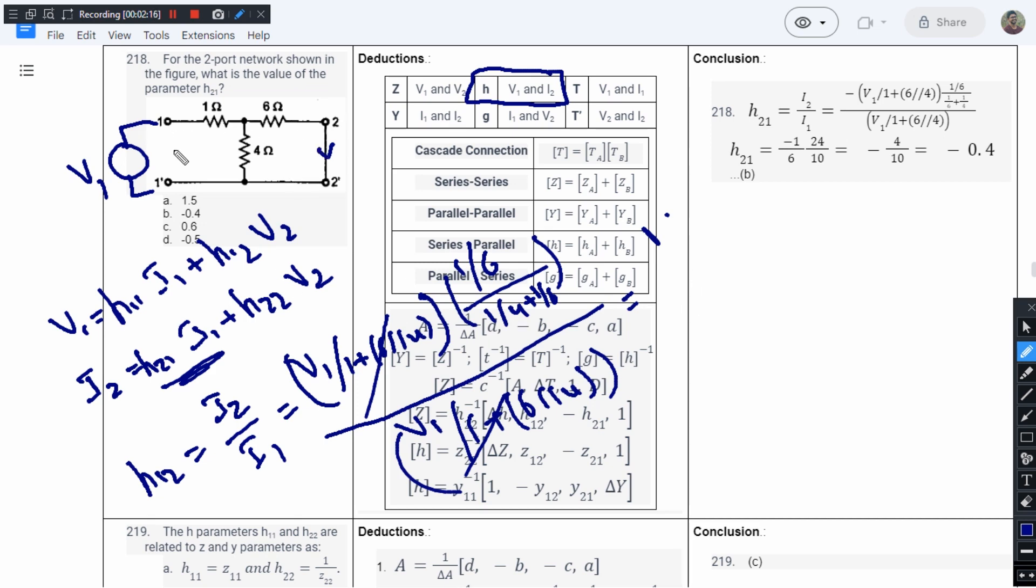While analyzing two-port networks, we know we will consider both the currents to be entering. But here we have said that this is I2, but the actual formula is based on the assumption that the current is entering inside. So we will have to take a minus sign here. So it will be minus 1 by 6 into 6 times 4 is 24 divided by 6 plus 4 is 10.